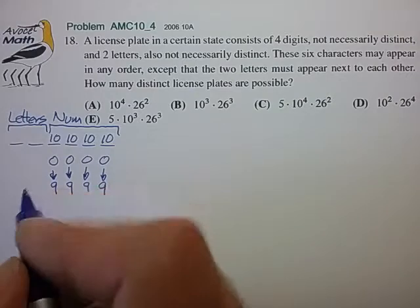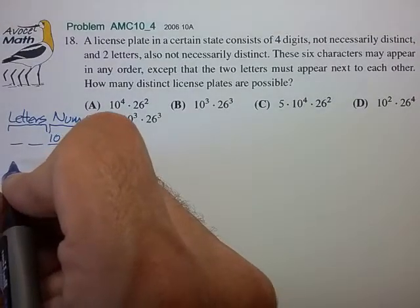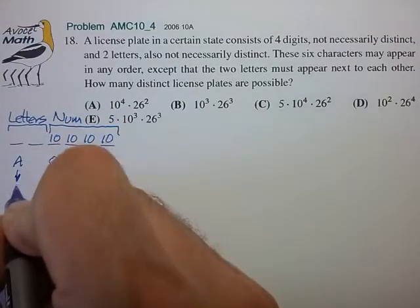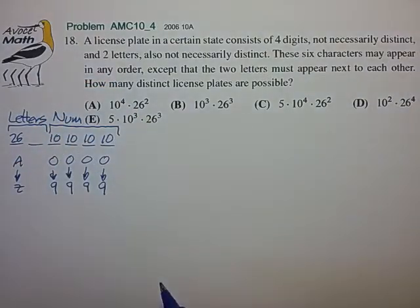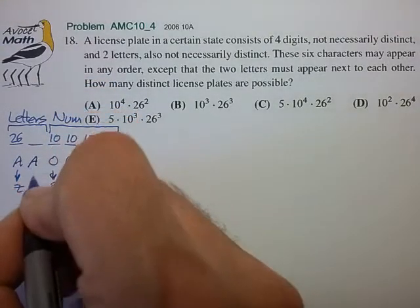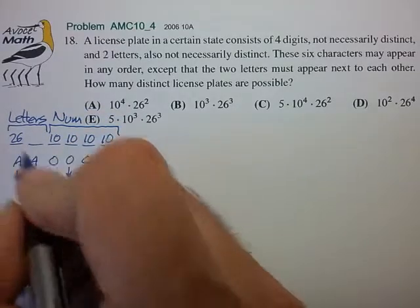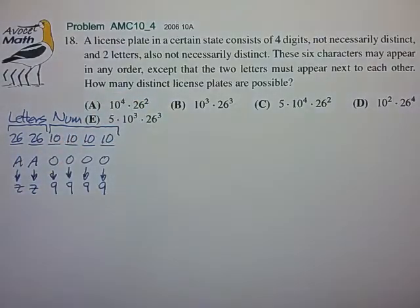Now the letters work out pretty much the same way. For the first letter position we can choose from A through Z for 26 possibilities, and likewise since we allow for duplicate letters we can choose A through Z for the second letter position for 26 possibilities.